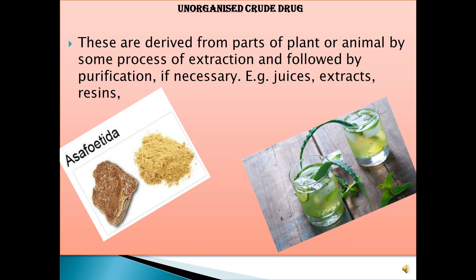Clove is one of the flower parts. Unorganized drugs are derived from parts of the plant or animal by some process of extraction followed by purification if necessary. Examples include juice, extracts, and resins. Asafoetida is one of the resin products obtained from a plant source. Aloe juice is obtained from the aloe plant.